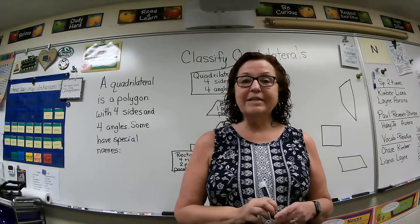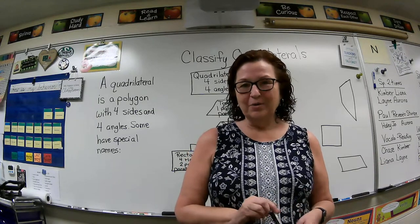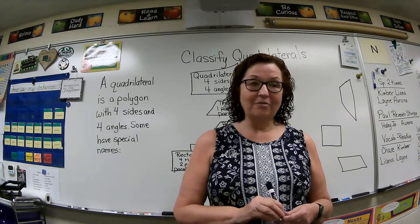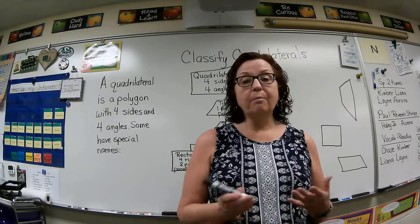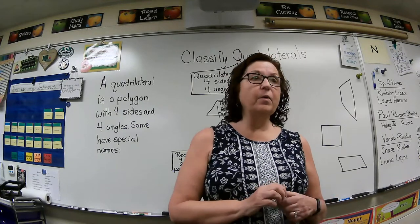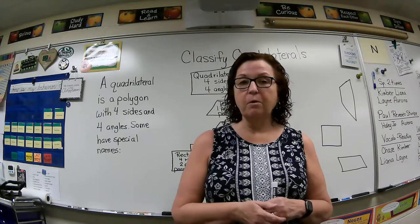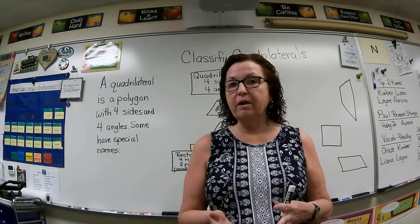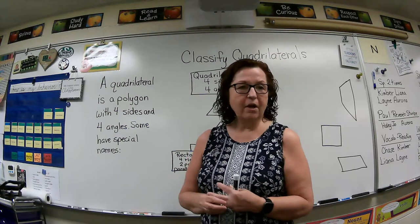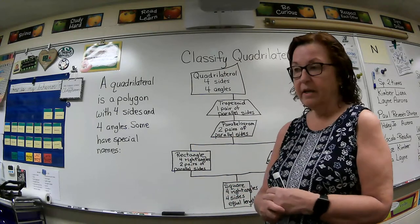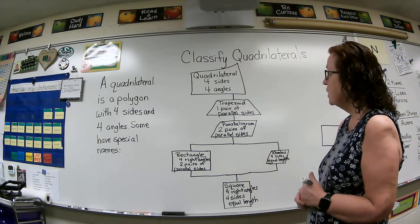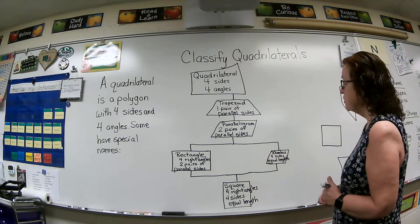We'll learn what attributes each of these special quadrilaterals have, so that you can identify quadrilaterals when you see them. A polygon is a closed figure. We did triangles before — that's a polygon with three sides. Now let's look at the diagram I made, classifying quadrilaterals.